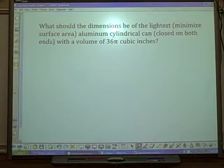What should the dimensions be of the lightest? Minimize surface area. Aluminum cylindrical can closed on both ends with a volume of 36π cubic inches.